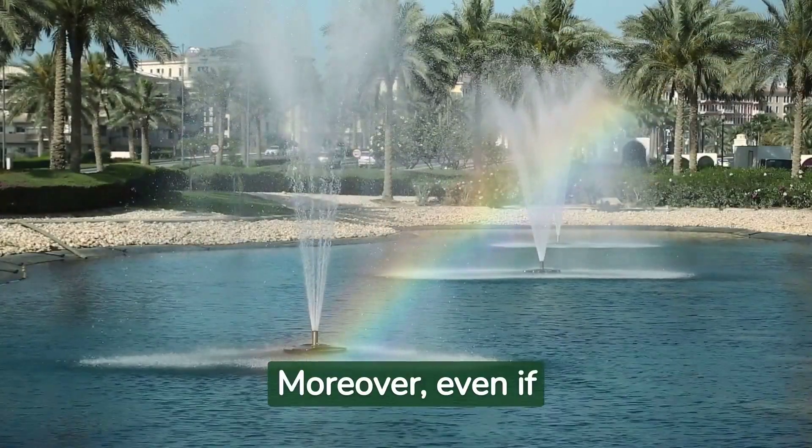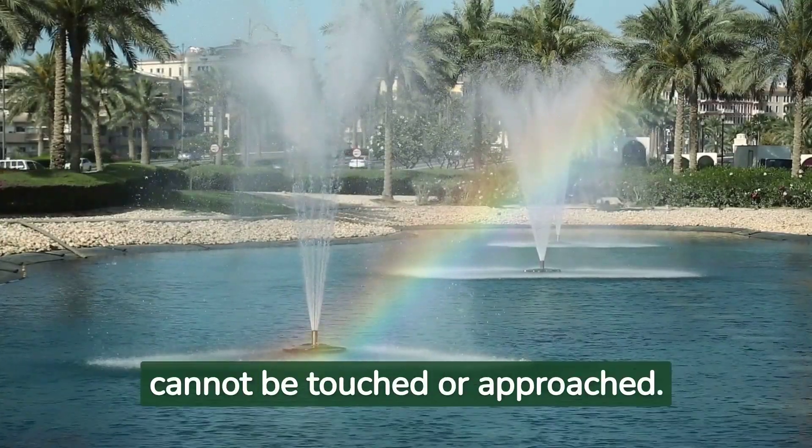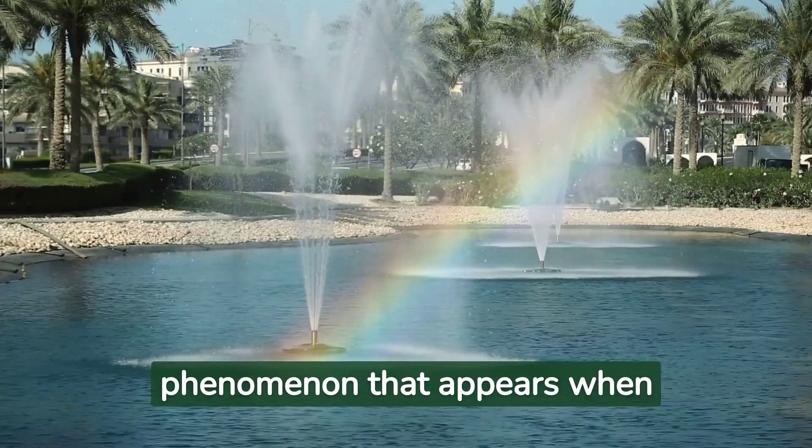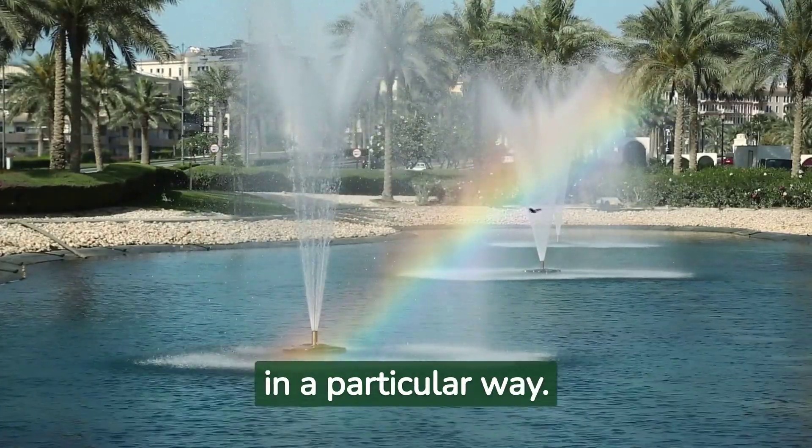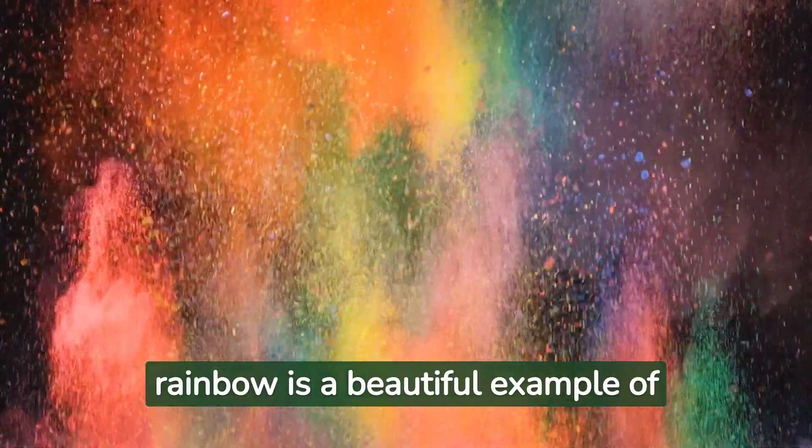Moreover, even if the conditions are perfect, a rainbow is not a physical entity. It cannot be touched or approached. It is an optical phenomenon that appears when sunlight and raindrops combine in a particular way. In essence, a rainbow is a beautiful example of physics in action.